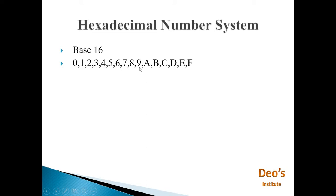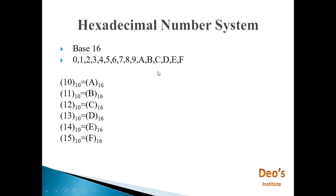So 0 to 9 and then A to F. Decimal 10 is represented by A in hexadecimal, 11 is represented as B, 12 is represented as C, 13 is represented as D, 14 is represented as E, and 15 is represented as F.